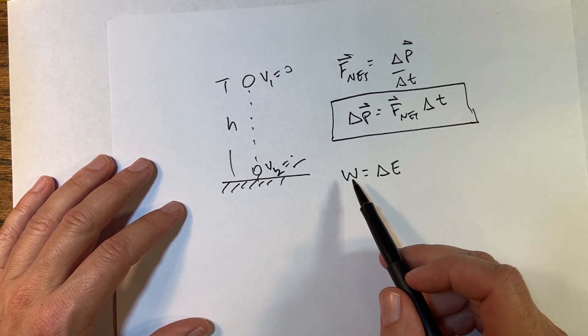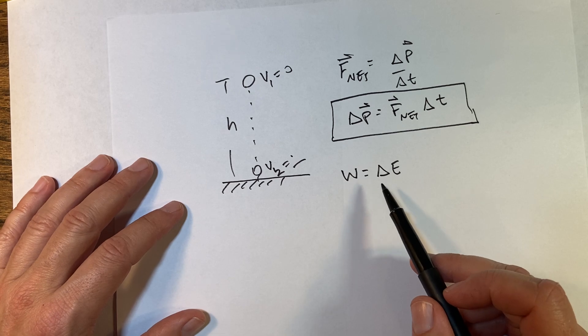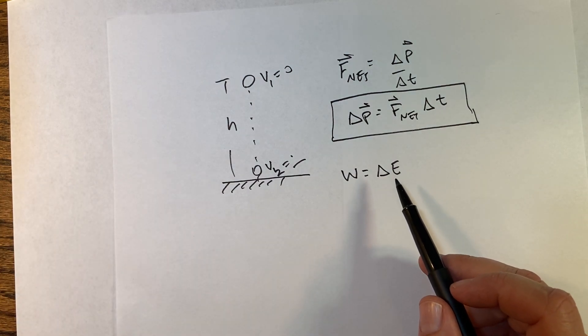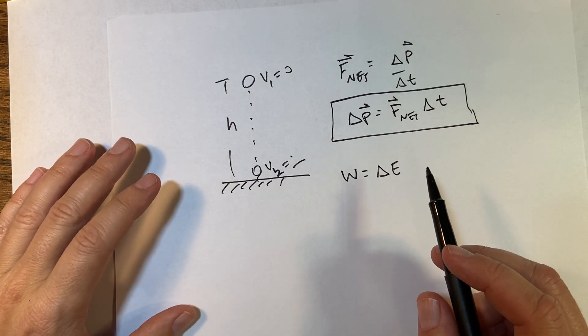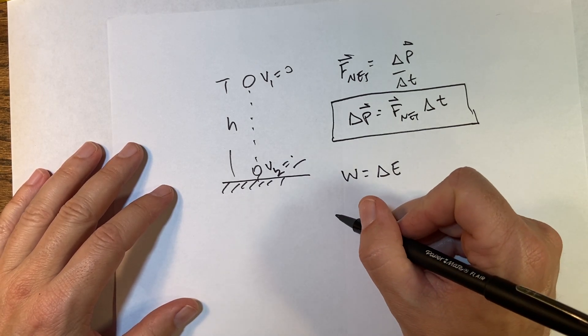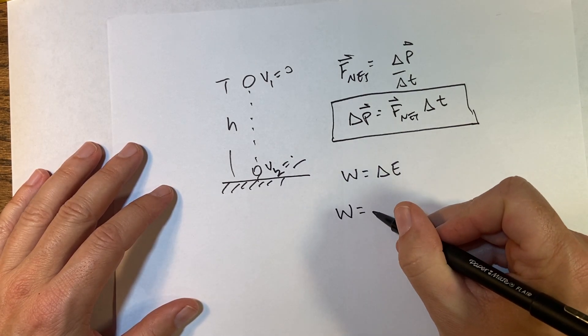The work in that is momentum principle. The work-energy principle says this: work—which you don't know what that is—is equal to the change in energy, which you don't know what that is. Okay, so let me give a definition of work that we'll change later. So work can be defined as work is a force times a displacement.